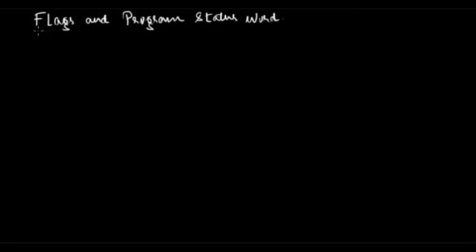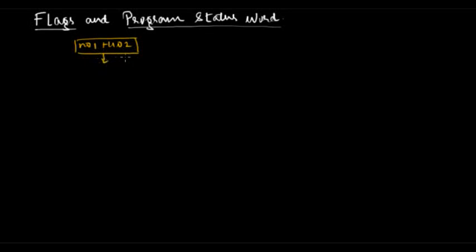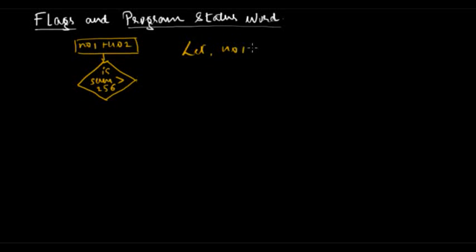In this video we will learn about flags and program status word of 8051. Let's assume we have written a piece of code in which we are adding two numbers, number one and number two. Later we are testing whether the sum is greater than 256. Let's say number one is 128 and number two is 130. When we add these two numbers in decimal we get 258, and we can easily say the sum is greater than 256. But how does this happen at the machine level?